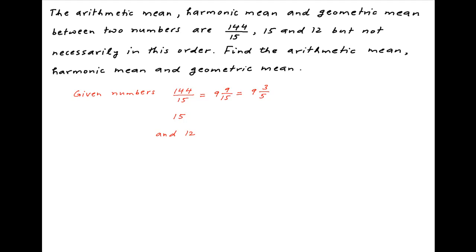Now note that the first of these numbers, 9 whole 3 upon 5, is also the smallest, and the second of the three numbers, which is 15, is the largest.